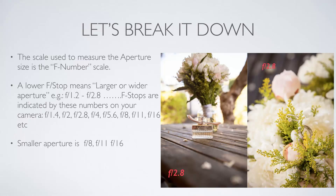For a smaller aperture you would go to f8, f11, f16 — that creates quite a small opening in your shutter, letting in less light. Using those settings you'll be able to capture deeper colors, and you'll also have a lot more of the scene in focus. Let's talk about that for a minute.